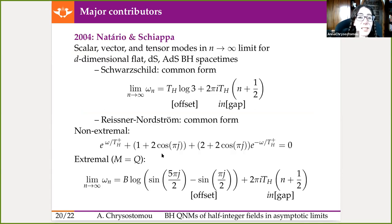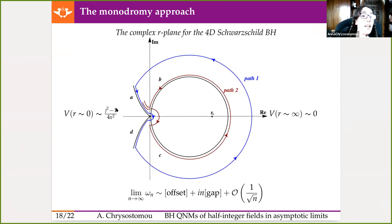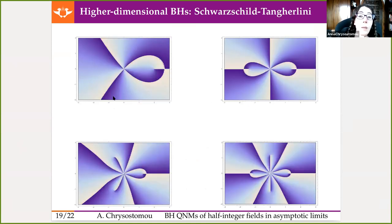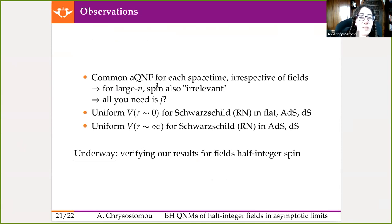Although I put that in inverted commas, because we see here that there is a J, and that has to do with the spin of the field. So the spin comes into play during the calculation, but the overall expression is common. And the two features that we noticed was that the potential for the Schwarzschild black hole near the origin remains the same in flat ADS and DS cases for the Schwarzschild and the Reissner-Nordstrom black hole. Similarly, the potential near infinity is once again a constant once you include the cosmological constant. At present, we're verifying our results for the application of the half-integer spin in this monodromy technique.